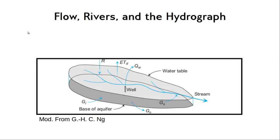In a watershed, when rainfall lands on the surface, most of that water doesn't land directly on the stream. Most of that water lands on the surrounding landscape and the hill slopes, and from there eventually reaches a stream and exits the catchment. Those processes are truly core to understanding catchment hydrology, and therefore we're going to talk today about flow, rivers, and the hydrograph.